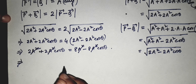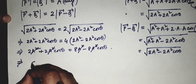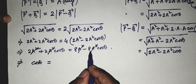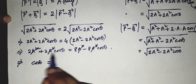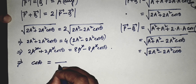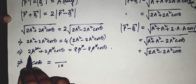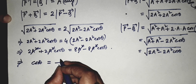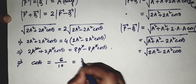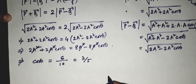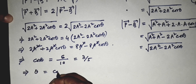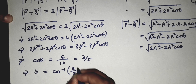Simplifying this equation: collecting the cos theta terms, we have minus eight and plus two giving plus ten on one side, and plus eight and plus two giving plus six on the other side. This gives cos theta equals three by five, so theta equals cos inverse of three by five.